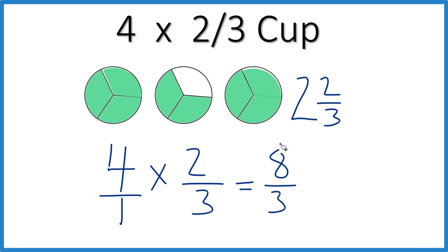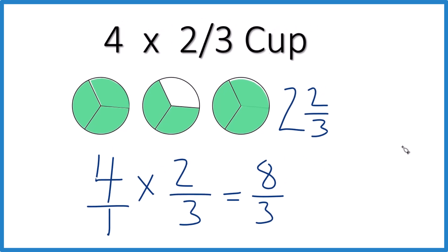You get eight thirds and you probably don't have an eight third cup measure in your house. So three goes into eight two times, two times three, that's six with two left over, bringing the three across, two thirds.